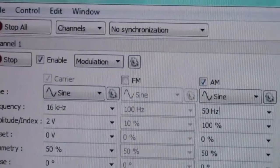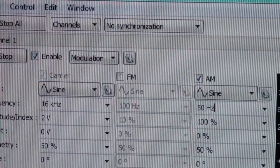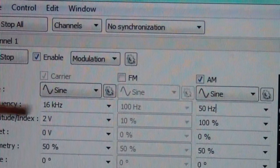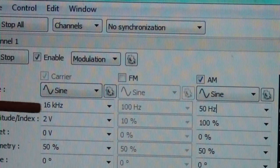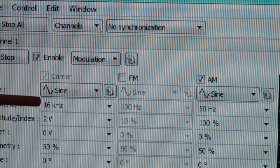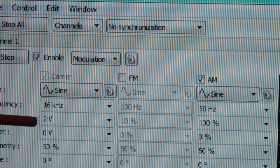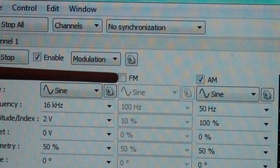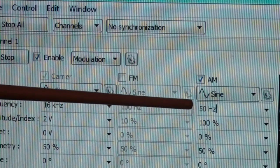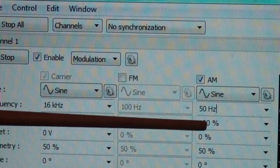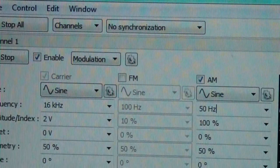We're using modulation - a sine wave of 16 kilohertz with a 2 volt amplitude. We have turned off FM modulation and turned on AM modulation at 50 hertz, a sine wave with 100% modulation.